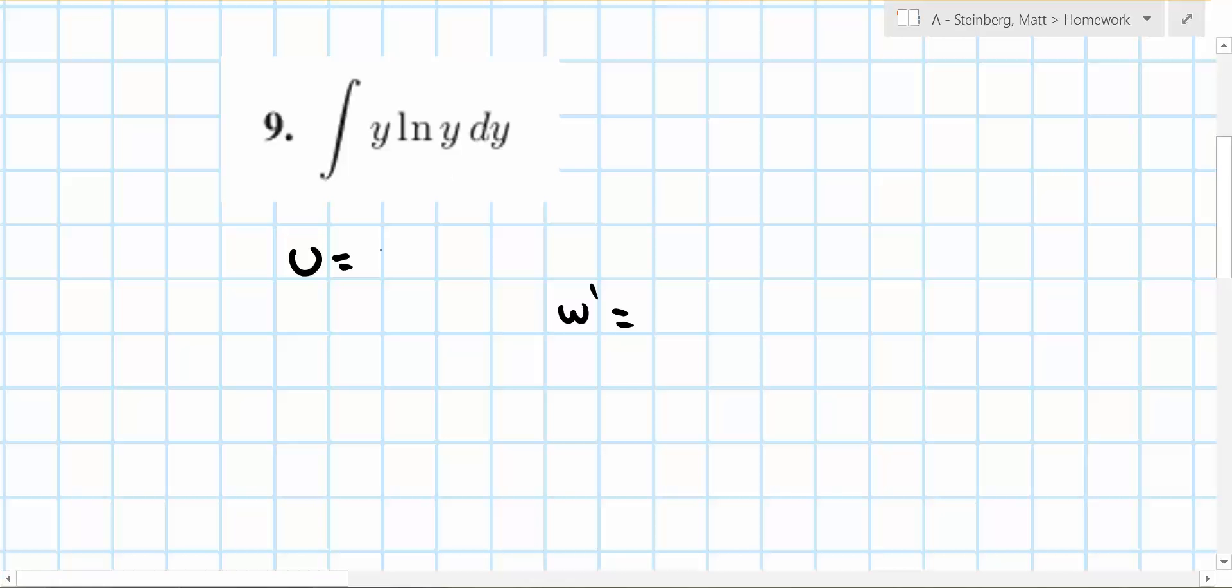So I'm just going to try, you can do this either way, but one way will work and one way very much won't. So I'm going to try u is equal to ln y which would make u' equal to 1 over y dy.